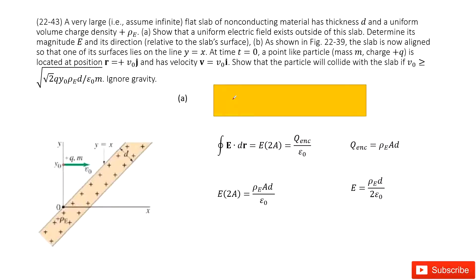Welcome to my channel. I'm Zhang Jingxu. Let's look at problem 43 in chapter 22. Chapter 22 is about Gauss's rule. We have a very large flat slab non-conducting object. The keyword non-conducting tells us the charge is uniformly distributed. The thickness is D and the charge density is ρE. First of all, we need to show the electric field density outside of this object.